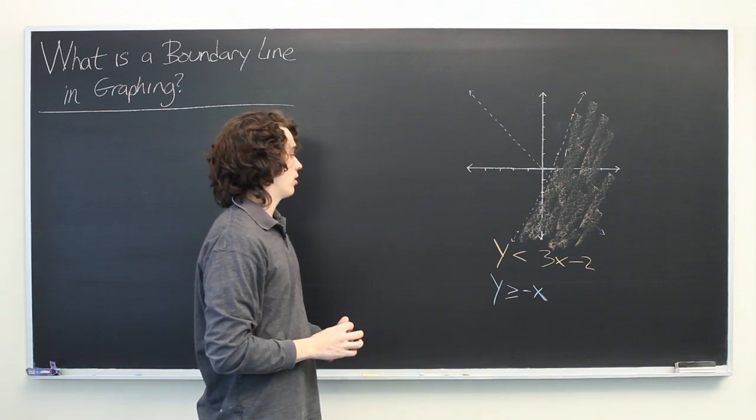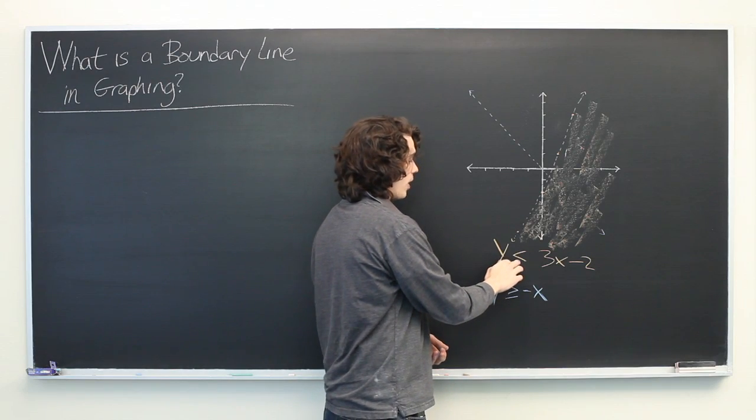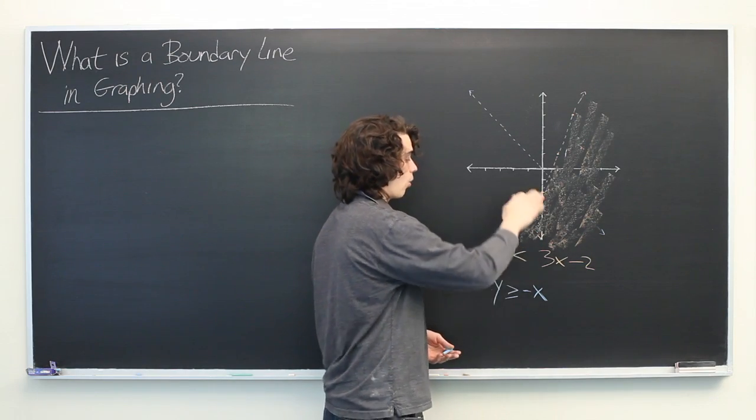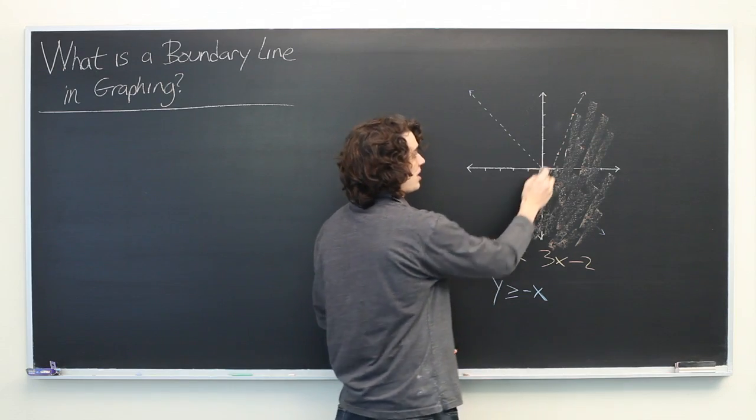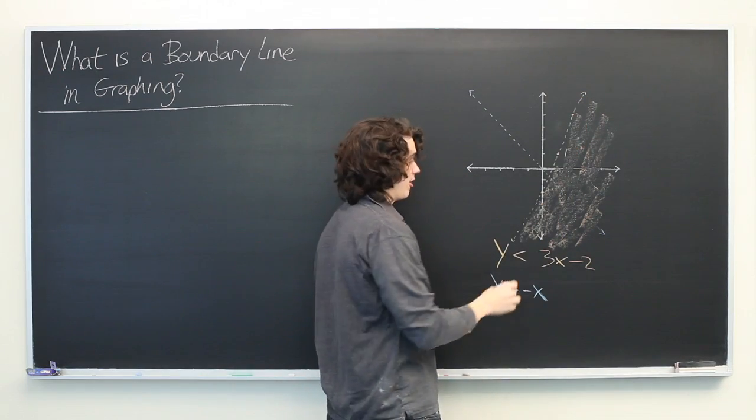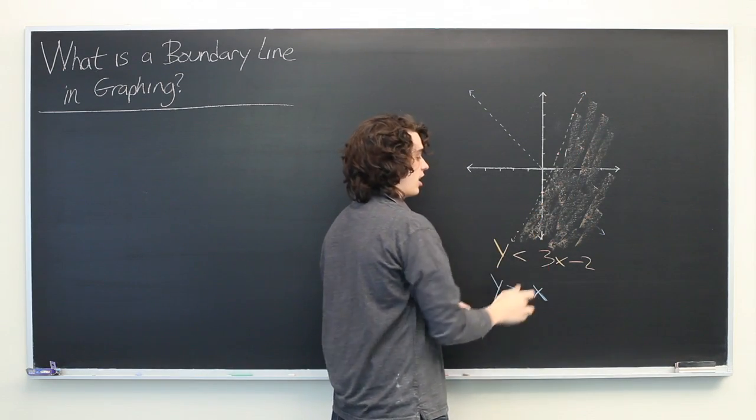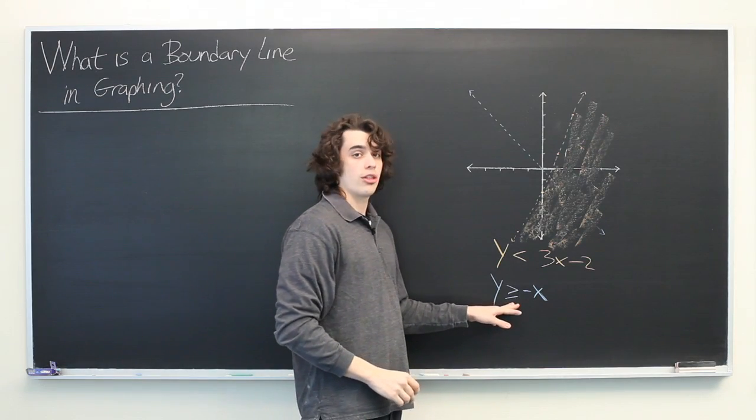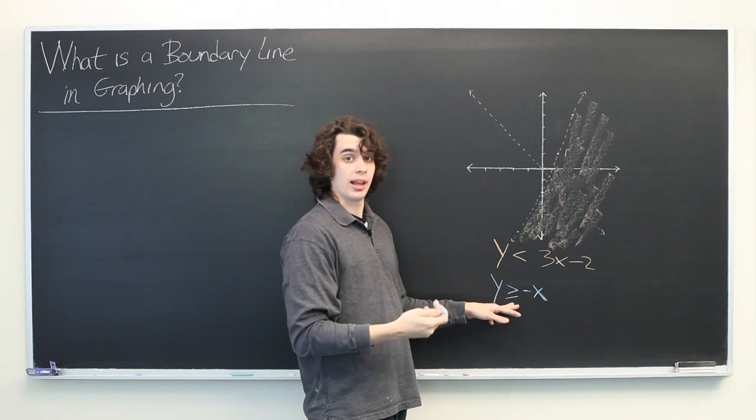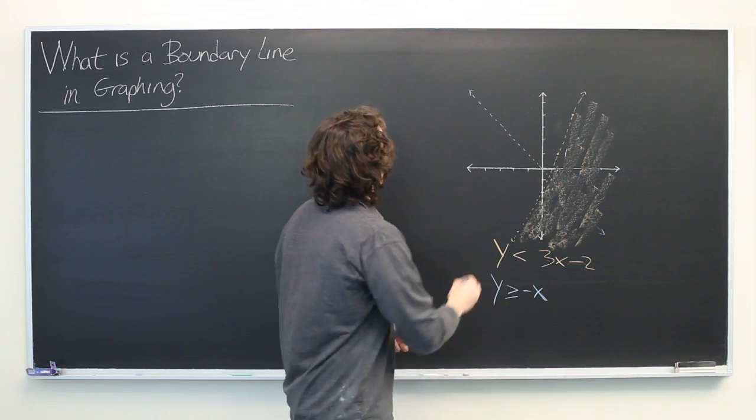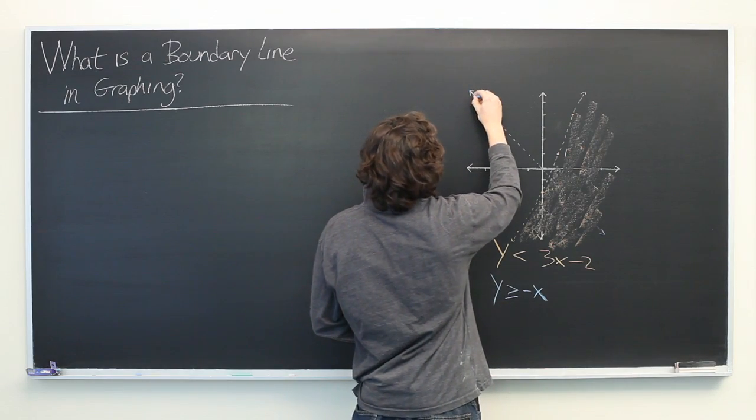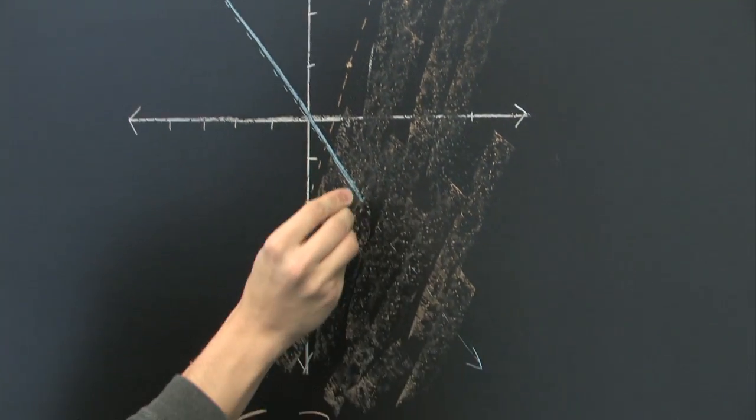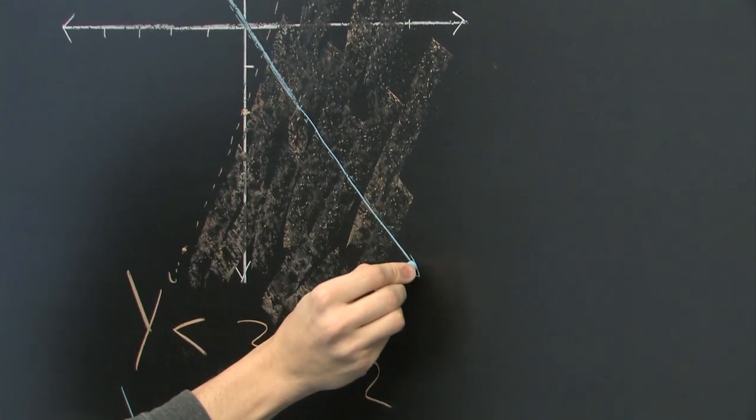Now, one slightly different piece of notation here. When you have a strict inequality, meaning it's just less than or just greater than, then we use a dashed line to indicate that the points on that line do not satisfy this. However, if it is greater than or equal to or less than or equal to, then we make this a solid line to indicate that the points on this boundary line do satisfy our inequality.